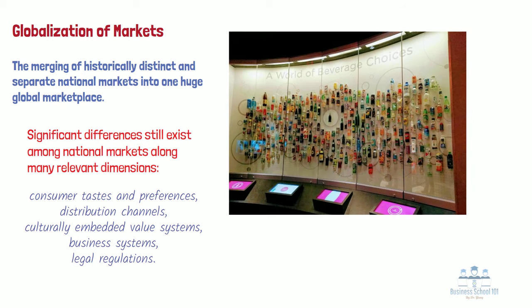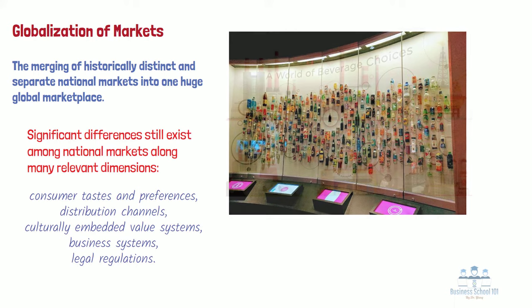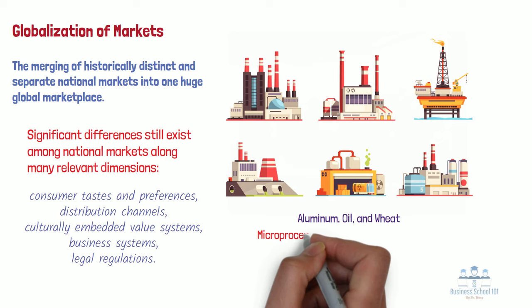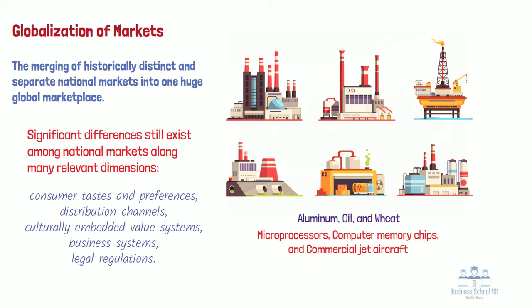If you visit the World of Coca-Cola, a museum located in Atlanta, Georgia, you will find that it not only showcases the history of the Coca-Cola company, but it also exhibits more than 50 different flavors of Coca-Cola, which have been made to meet consumers' various tastes in different countries. Therefore, the most global markets currently are not markets for consumer products, but markets for industrial goods and materials that serve a universal need the world over. These include markets for commodities such as aluminum, oil, and wheat, and for industrial products such as microprocessors, computer memory chips, and commercial jet aircraft.